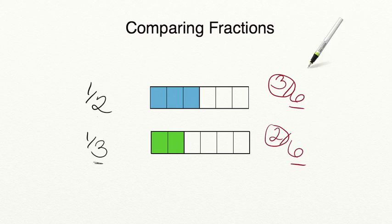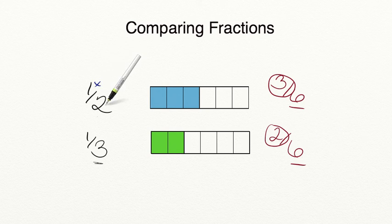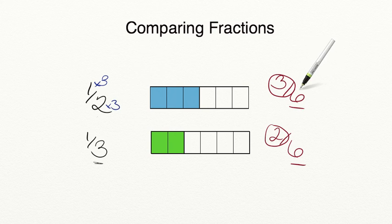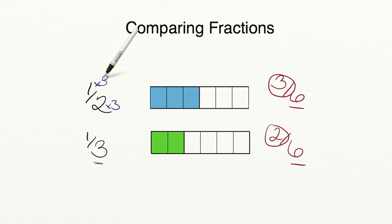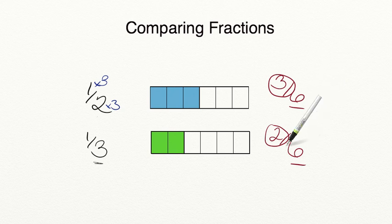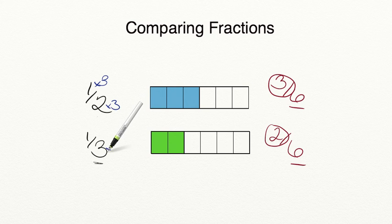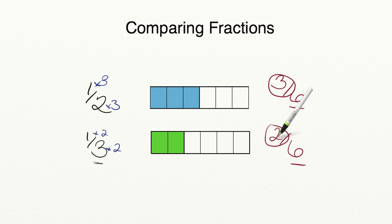You can also find equivalent fractions with common denominators by multiplying your numerator and denominator by the same number. So if we multiply one-half by three: one times three equals three, and two times three equals six. To get a common denominator of six when working with thirds, we multiply the numerator and denominator by two: one times two equals two, and three times two equals six.